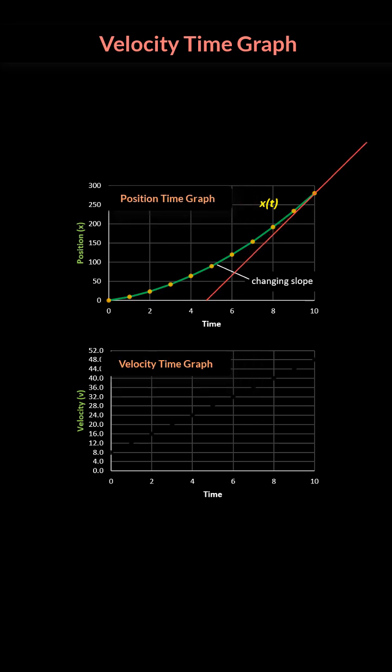the instantaneous velocity of the car at this point is the value of the slope of the tangent at this point, which can be plotted here.